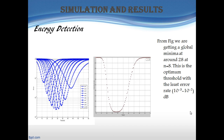This is a plot showing the energy detection process. In the leftmost plot, we are finding a global minima at around 28 for N equal to 8, which is the optimum threshold for the least error rate. The error rate comes out to be between 10 to the power of minus 3 and 10 to the power of minus 2 dB.